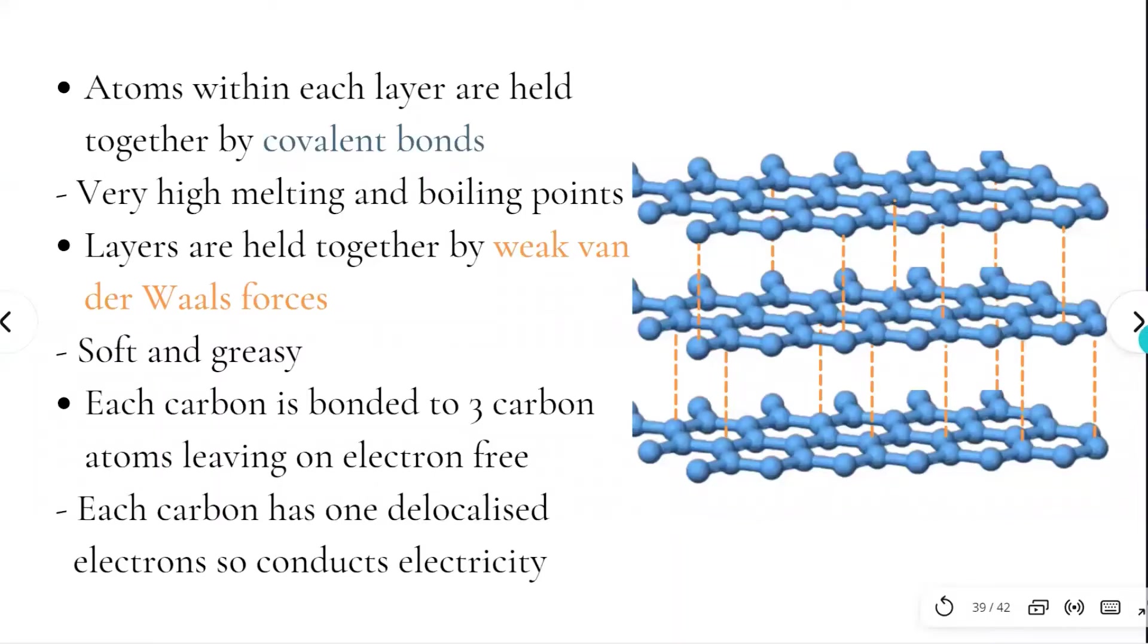As each carbon has four electrons, but only three are used in bonding to those three atoms, there is one free valence electron that is delocalized, so free to move within the layers.